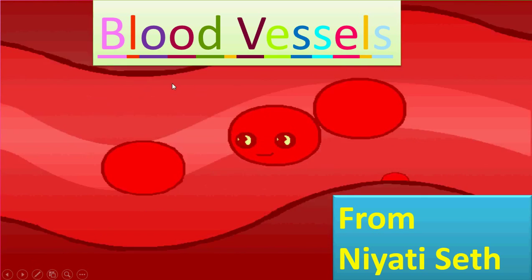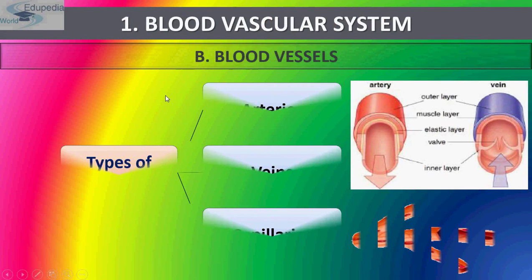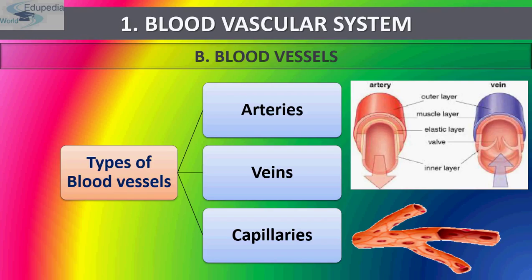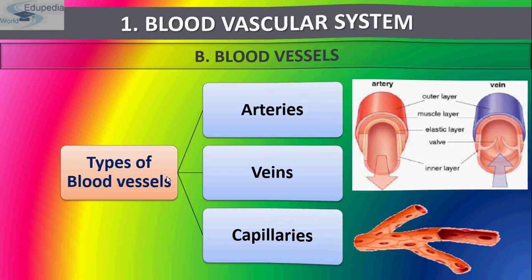There are three types of blood vessels: arteries, veins, and capillaries. In arteries there is an outer layer, a muscle layer, and an elastic layer — the elastic layer is only found in arteries and not in veins. Valves are found in veins and not in arteries. Both arteries and veins share an outer layer, muscle layer, and inner layer.